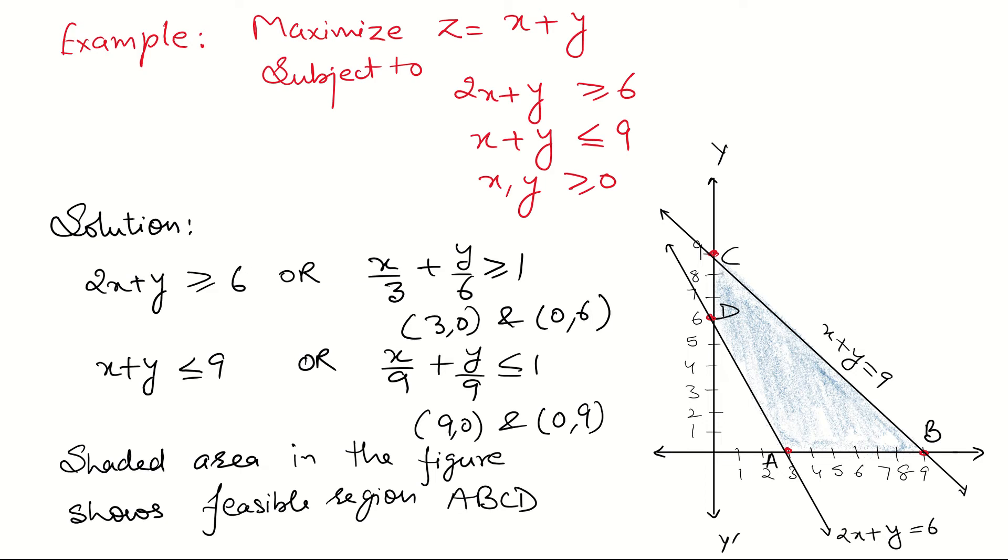In this example, we want to maximize z which equals x plus y, subject to constraints 2x plus y greater than or equal to 6, x plus y less than or equal to 9, and x, y greater than or equal to 0.